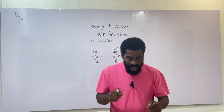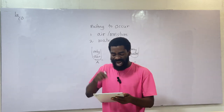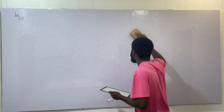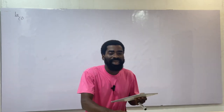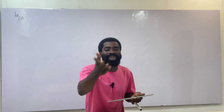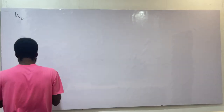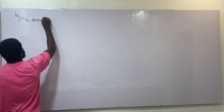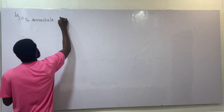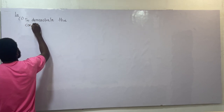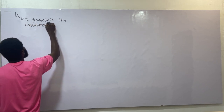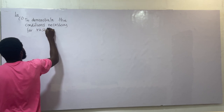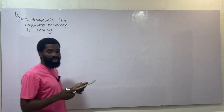Question 1a-i: Suggest an aim for the experiment. The aim of the experiment is to demonstrate the conditions necessary for rusting.